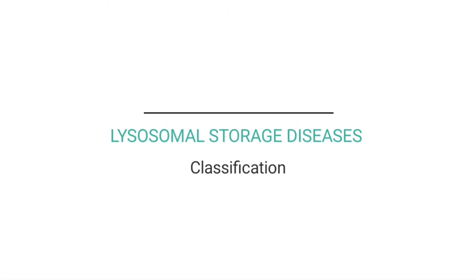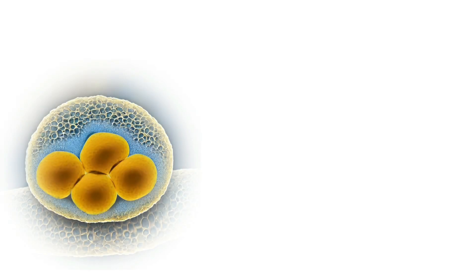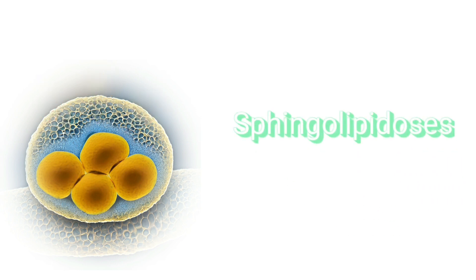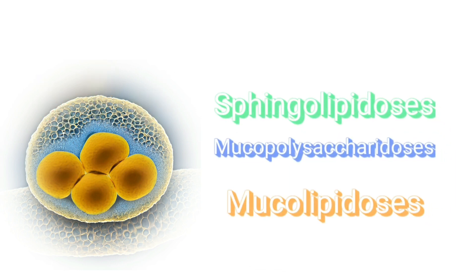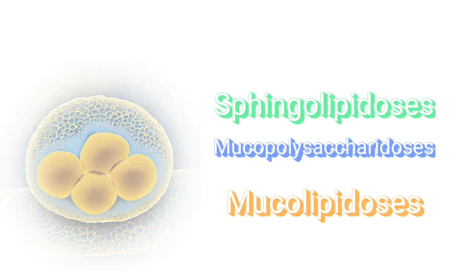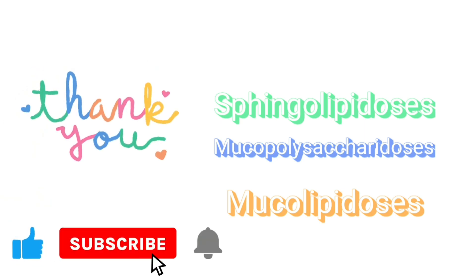Classification of lysosomal storage diseases: the lysosomal storage diseases are classified on the basis of the accumulated material. The main types are sphingolipidosis, also called lipid storage diseases, mucopolysaccharidosis, and mucolipidosis.